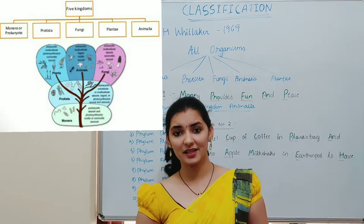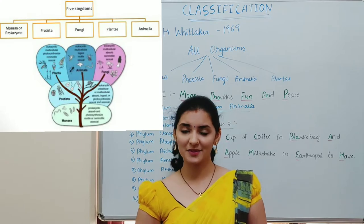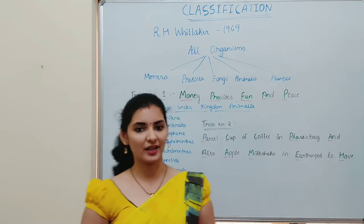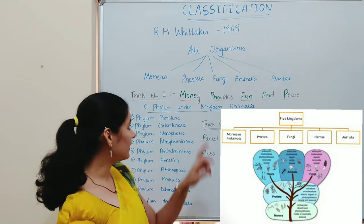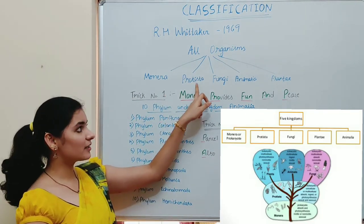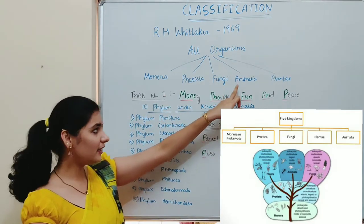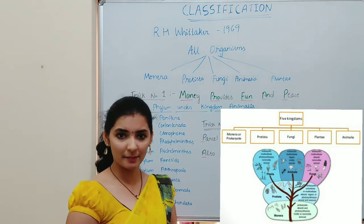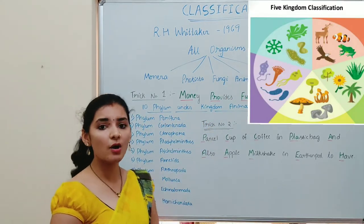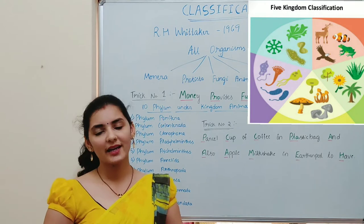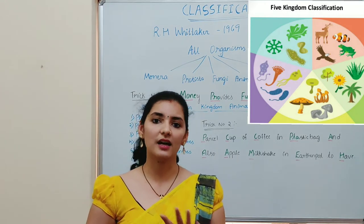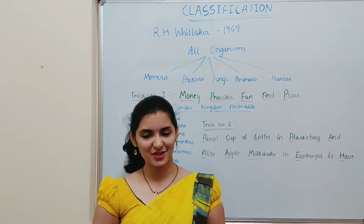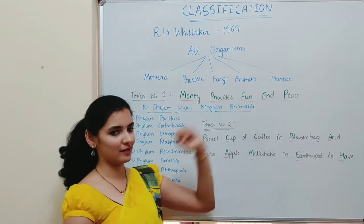According to RH Whittaker's 5 kingdoms classification, all organisms are classified into 5 kingdoms: kingdom Monera, kingdom Protista, kingdom Fungi, kingdom Animalia, and kingdom Plantae. So all organisms which are present on this earth are classified into these 5 kingdoms. I think it's very easy to remember the names of these 5 kingdoms.